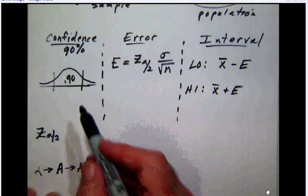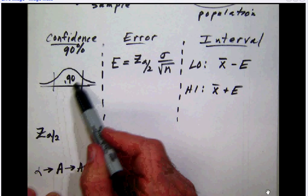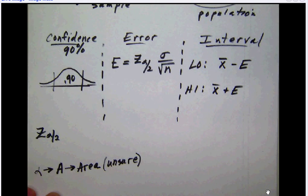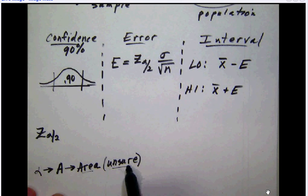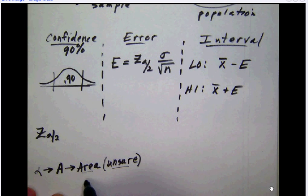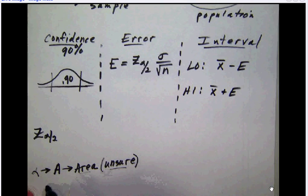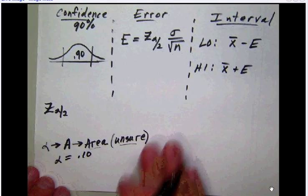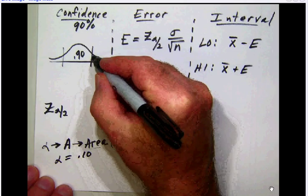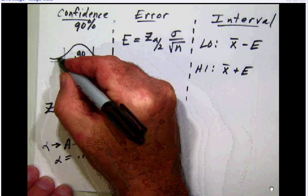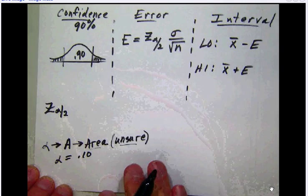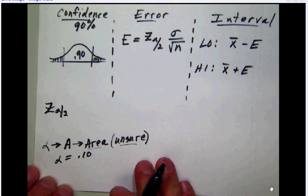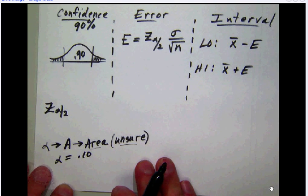Now you can see if we are 90% confident, then that means we must be 10% unsure. So our area that we are unsure of, our alpha value, in this case is going to be 10% or 0.10. Notice here that this area that we are unsure of is divided up into two parts.